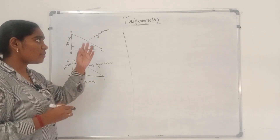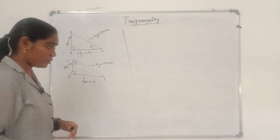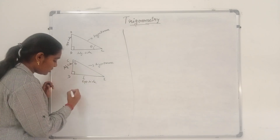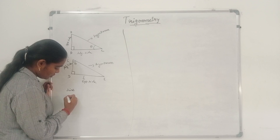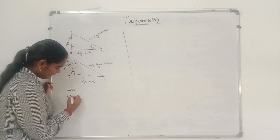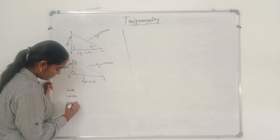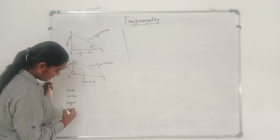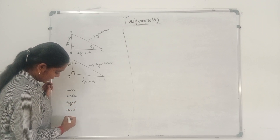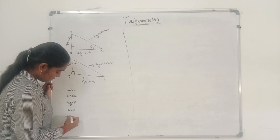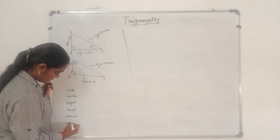In trigonometry, there are basically six trigonometric ratios. They are: sine, cosine, tangent, secant, cosecant, and cotangent.